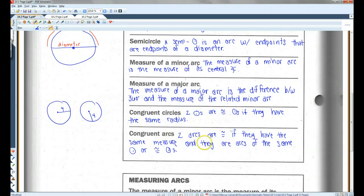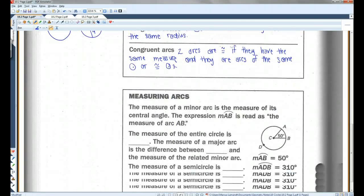Congruent arcs. Two arcs are congruent if they have the same measure and they are arcs of the same circle or congruent circles. And there'll be an example of that later.